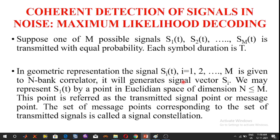We may represent s1(t) by a point in an N-dimensional Euclidean space, where N is less than or equal to M. This point is referred to as the transmitted signal point or message point. The set of message points corresponding to the set of transmitted signals is called the signal constellation.